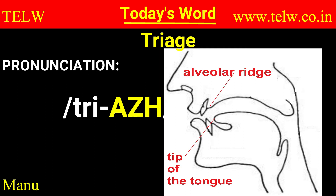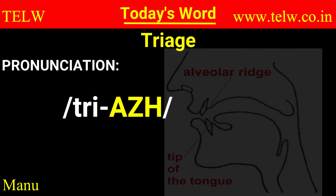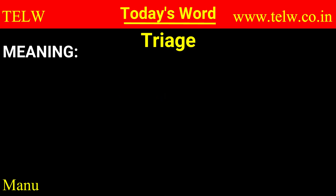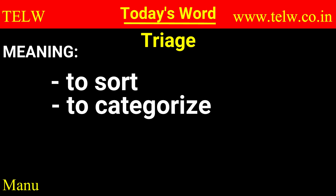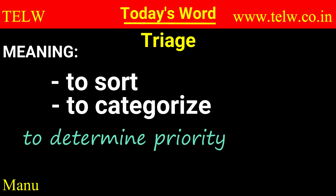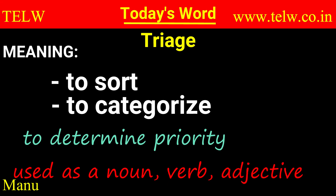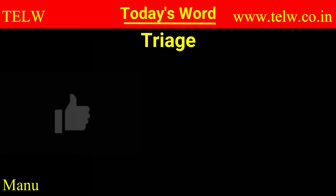It's a voiced form of 'sh' — which is 'zh' — triage. The stress is on '-arj.' It means to sort things, to categorize things, or even people, for a particular specific follow-up action. The idea is to determine priority — you sort them out and say, okay, this is priority number one, this is priority number two, and so on. This can be used as a noun, a verb, or an adjective.